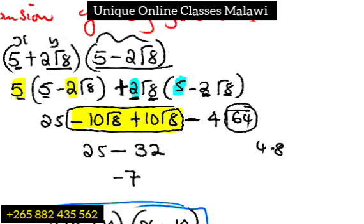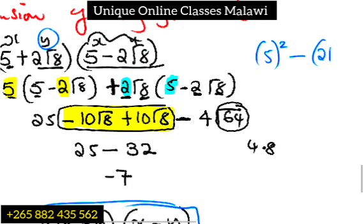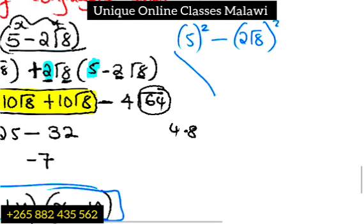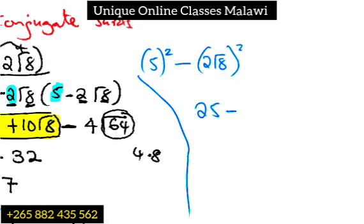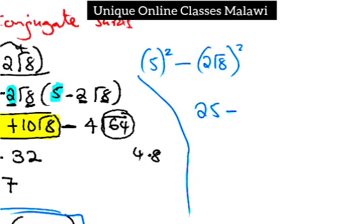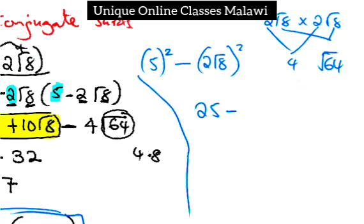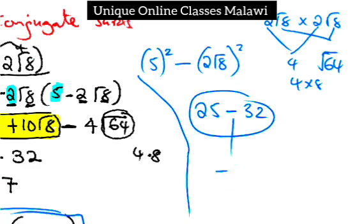5 is x, 2 root 8 is y. Five squared minus 2 root 8 squared. Five squared is 25. 2 root 8 squared: the 2 squared is 4, and root 8 squared is 8, so 4 times 8 is 32. The answer is 25 minus 32, which is negative 7. It's the same, you're going to still get the answer negative 7.